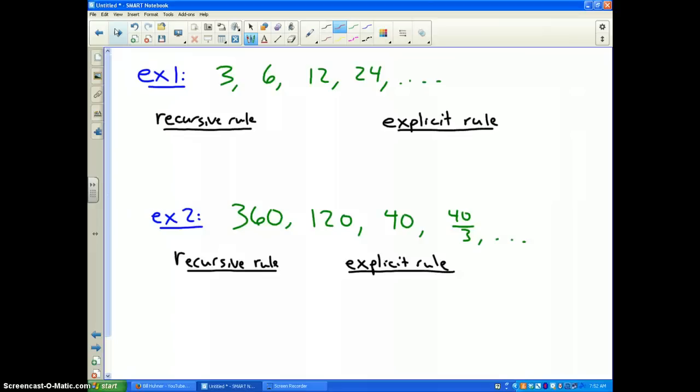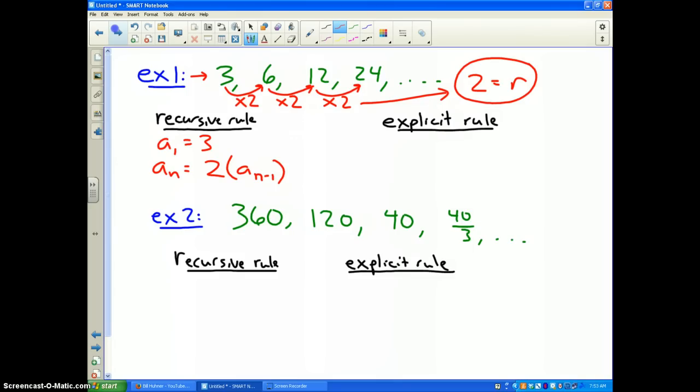Now let's look at a few examples. The geometric sequence 3, 6, 12, 24. Ask yourself what's the pattern. Well hopefully you notice that you're multiplying by 2. That means 2 is your r value, your common ratio. So if I need to write a recursive rule for this pattern of numbers, a sub 1, the first term is 3, and any successive term a sub n is equal to the common ratio 2 times a sub n minus 1. That's your recursive rule for this problem, very simple.